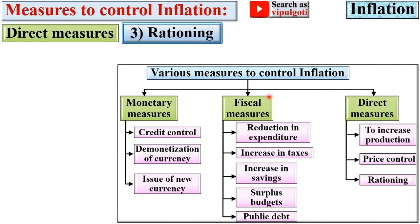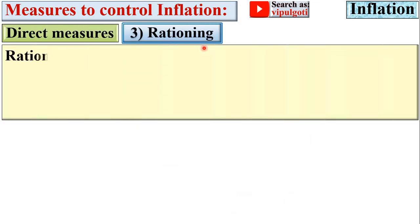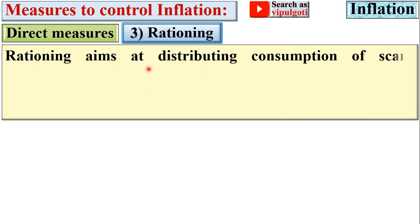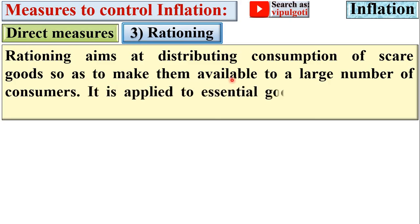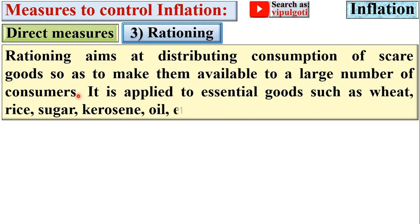Next: rationing. Rationing aims at distributing consumption of scarce goods so as to make them available to a large number of consumers. It is applied to essential goods such as wheat, rice, sugar, kerosene oil, etc.